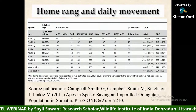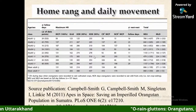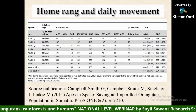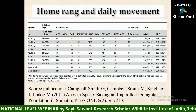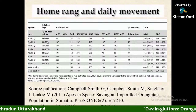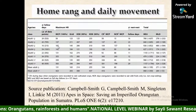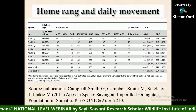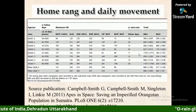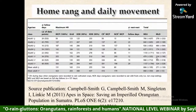Determining home range of orangutans in rainforest is difficult. A study by Campbell et al. in 2011 found that adult female home ranges vary from 58 to 187 hectares using minimum convex polygon and kernel density estimates. Males have larger home ranges than females, and males also tend to move longer daily path lengths than females.